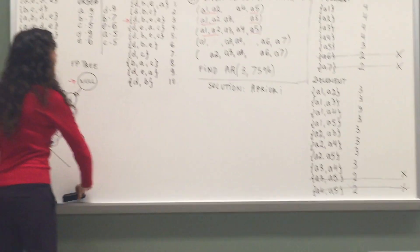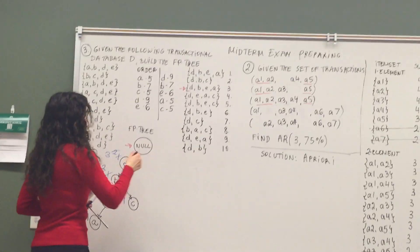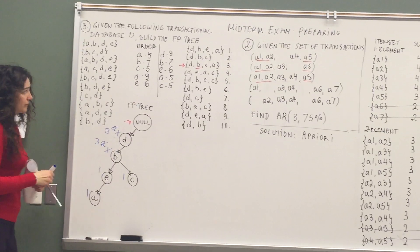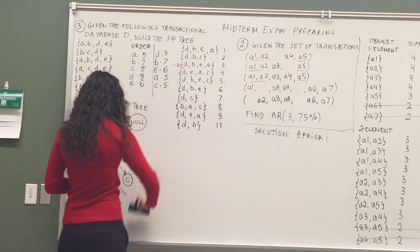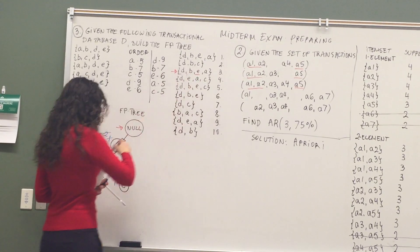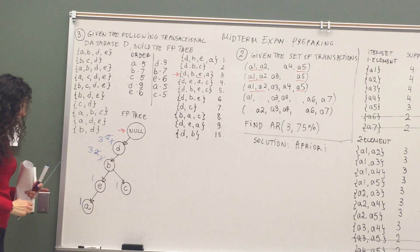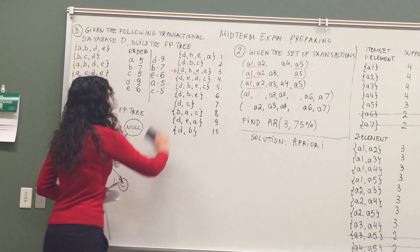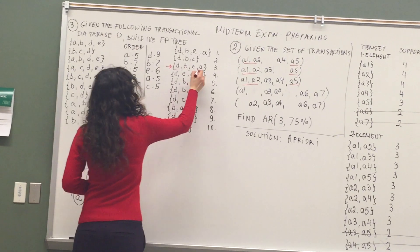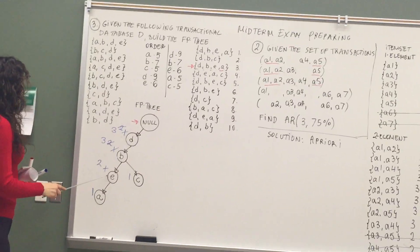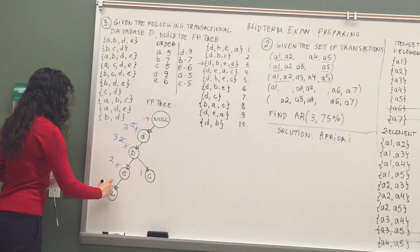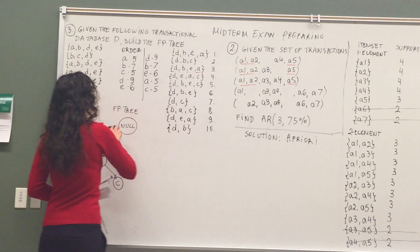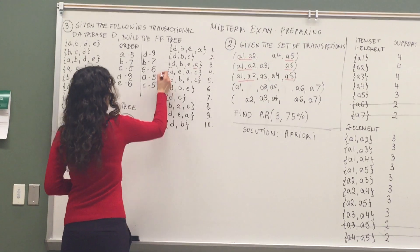Next item is B, so we increment the count for B. Next item is E. Do we have a child named E? Yes, so we increment the count. Next item is A. We do have a child named A, so we increment the count. We are done with this transaction, going to the next transaction.